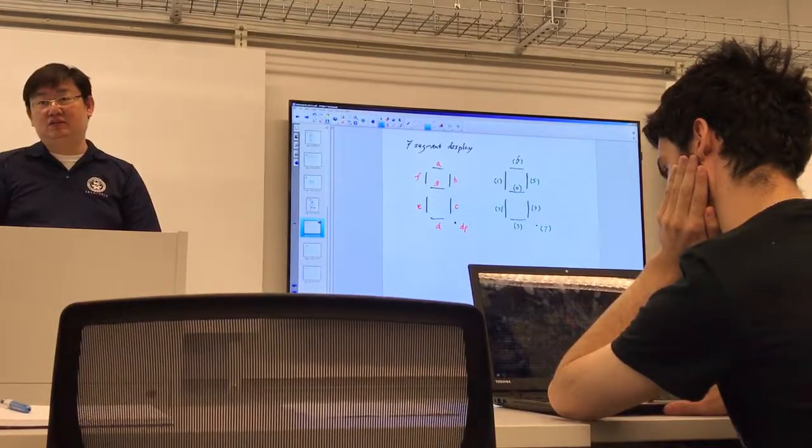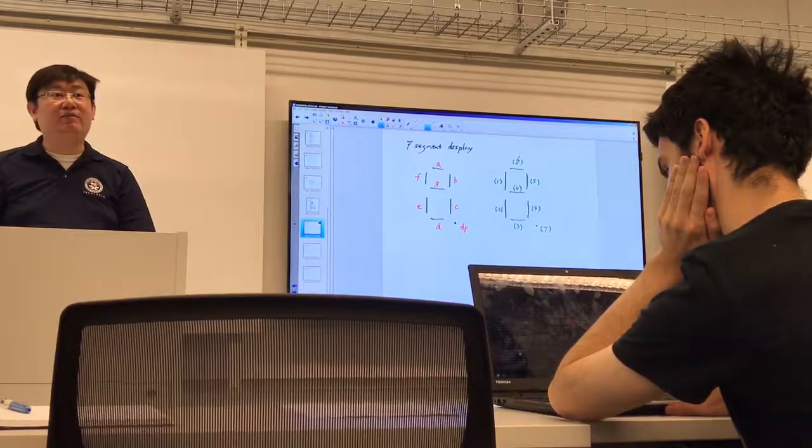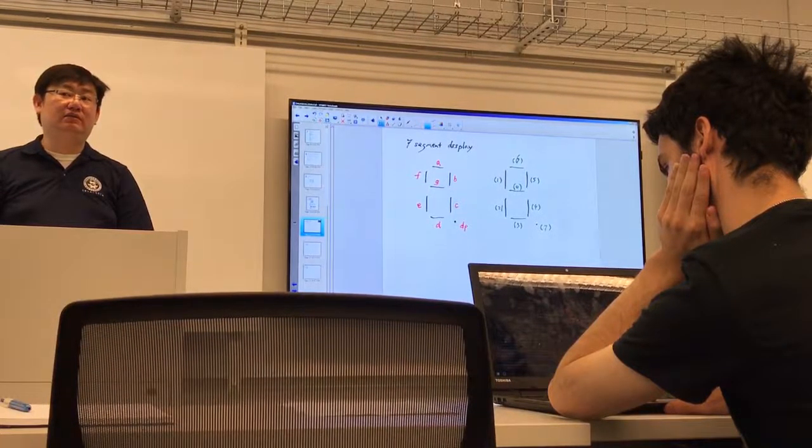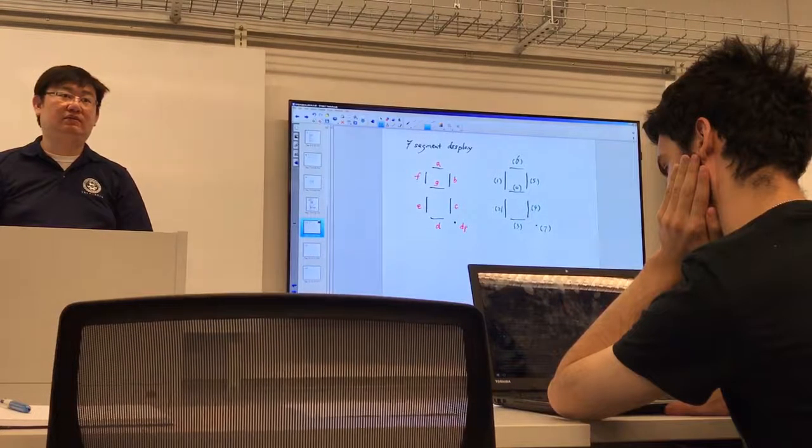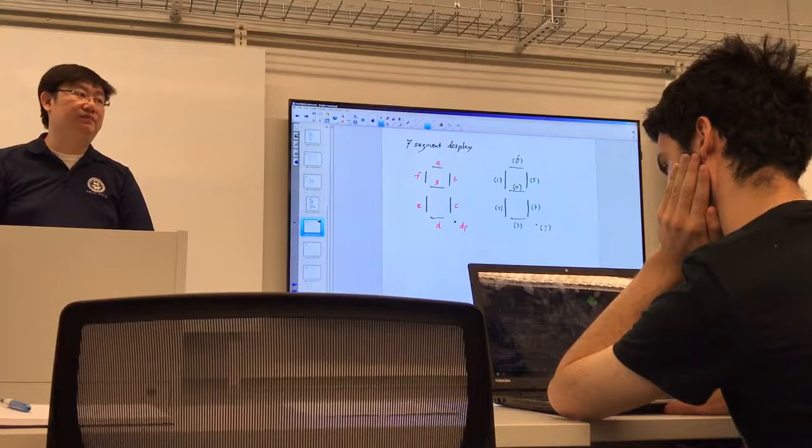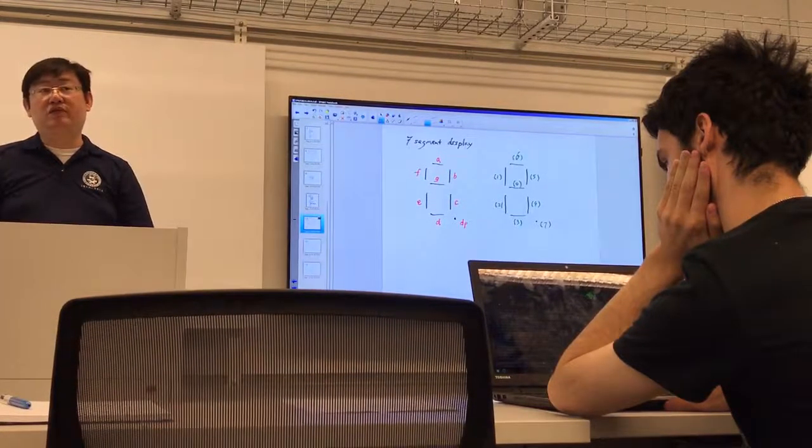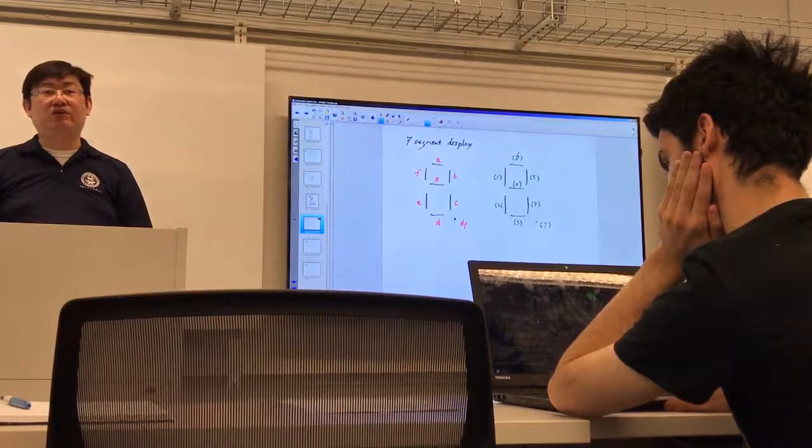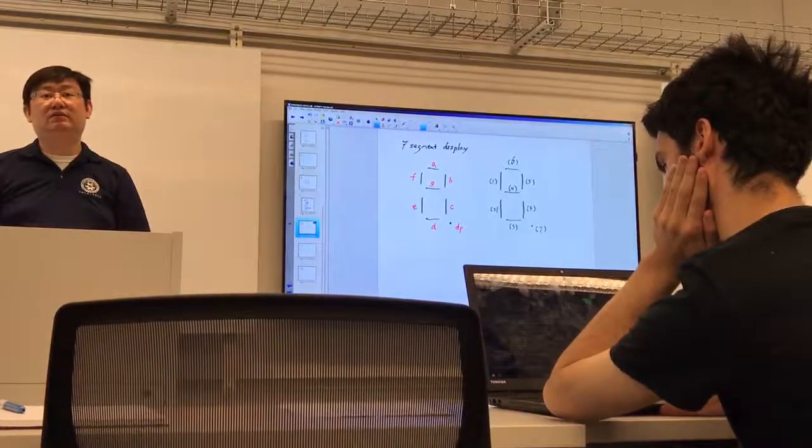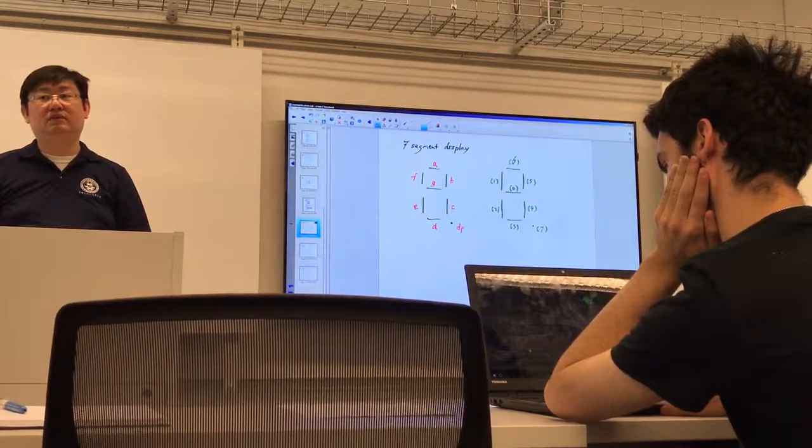Any questions? So this is a hexadecimal to 7-segment display. I'm going to go through the truth table, figure out the equations, and write them. Any questions?